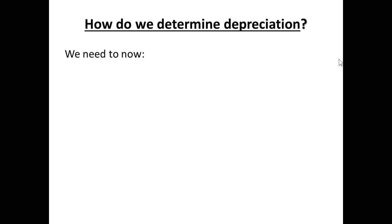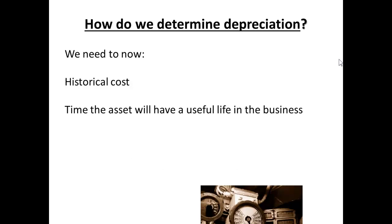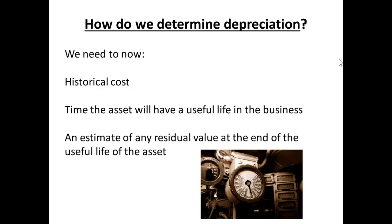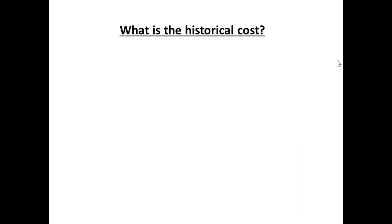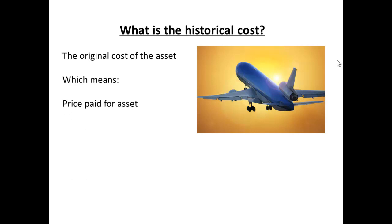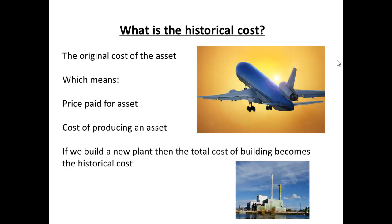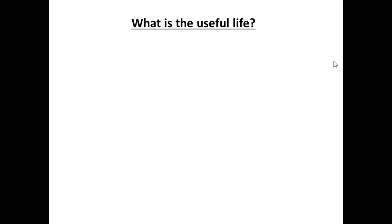So how will we determine depreciation? We need to know the historical cost and we need to know the time the asset will have a useful life in the business. And we need an estimate of any residual value at the end of the useful life of the asset — that's sometimes called its scrap value. The historical cost is the original cost of the asset, meaning it is the price that we paid for the asset. It could also mean the cost of producing an asset: if we build a new plant, then the total cost of building becomes the historical cost.